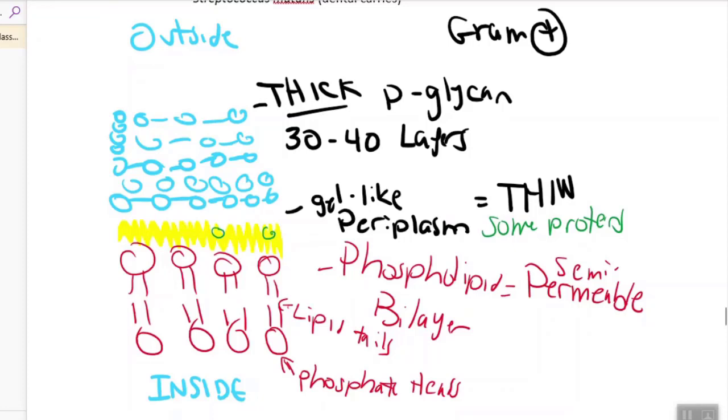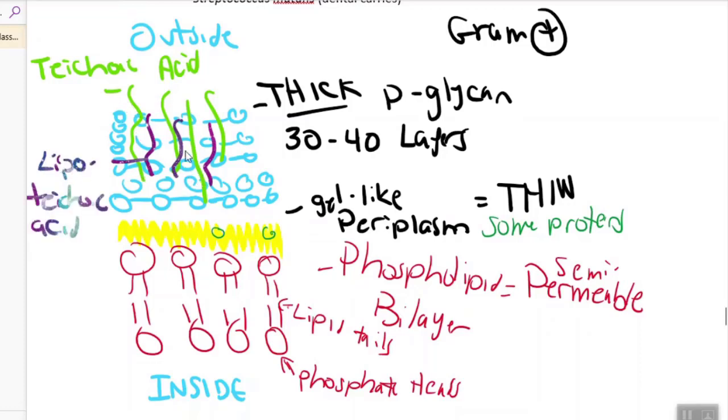The last thing that we have in gram-positive bacteria, these chains here that I'm going to put inside, these are called techoic acids. And there's also a second type, the lipotechoic acids. The techoic acids and lipotechoic acids help stabilize this really thick peptidoglycan.